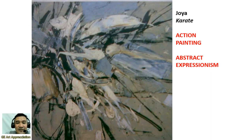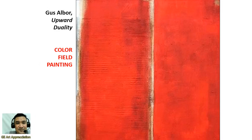Jose Hoya is the Filipino action painter, and his style is abstract expressionism. He entitled this painting Karate — it looks as though he is doing karate. Gus Albor is more on color field painting, and he entitled his work Upward Duality.